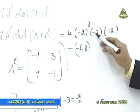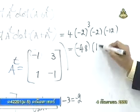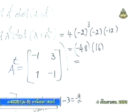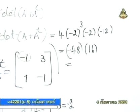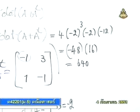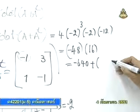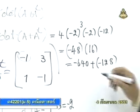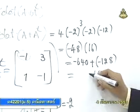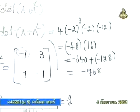-2 ยกกำลัง 3 กับ -2 ก็กลายเป็น +16. 4 คูณ -12 ก็เป็น -48. 16 คูณ 4 ได้ 64 ติดลบนะครับ แล้วก็บวกด้วย 16 คูณ 8 ก็ 48. คำตอบสุดท้ายคือ -768.